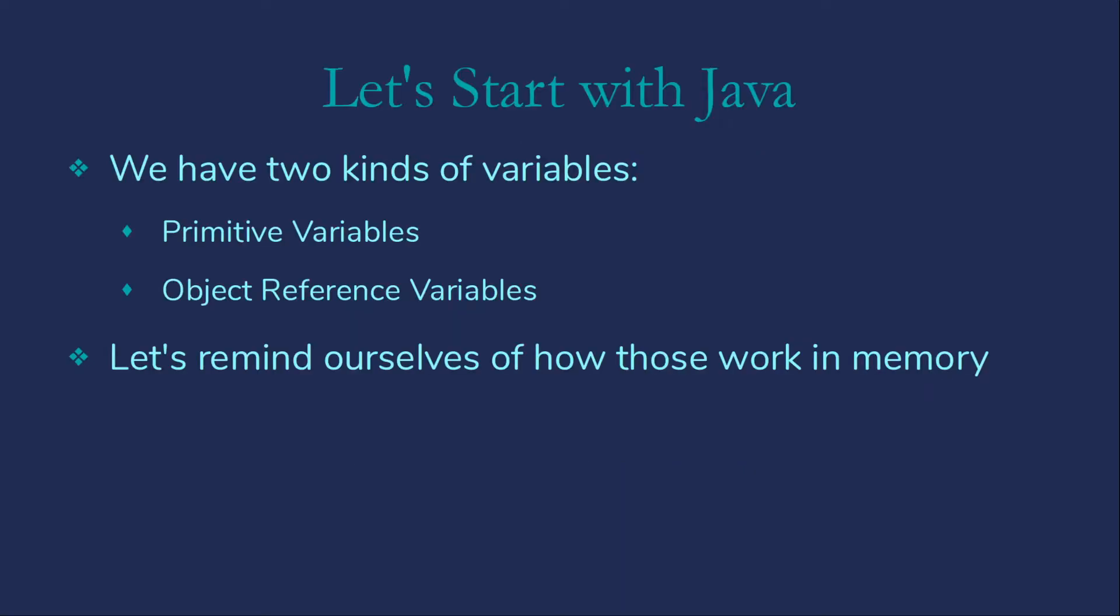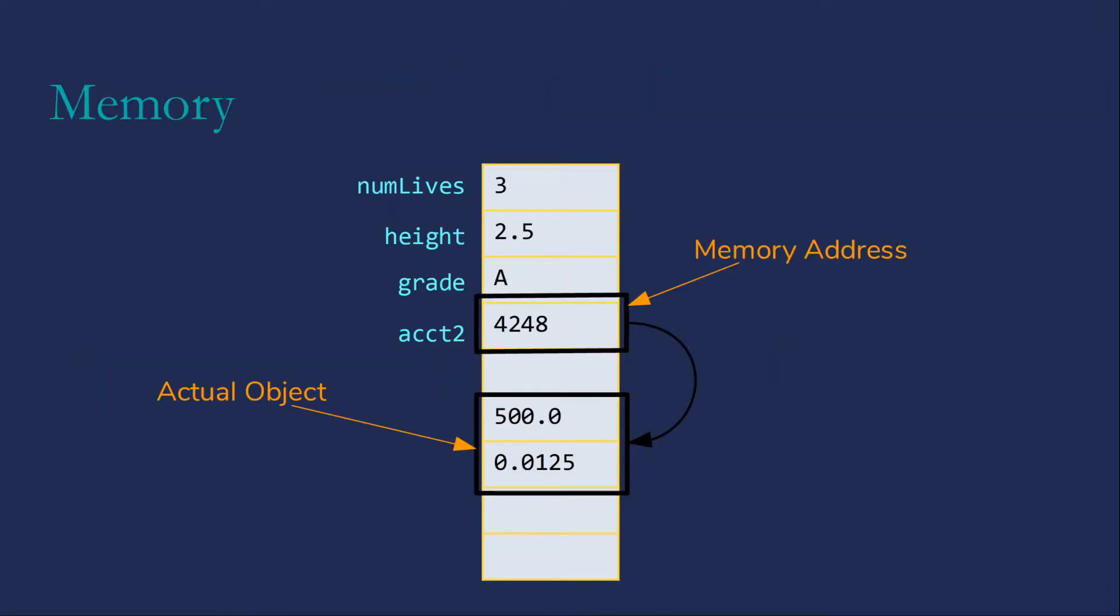I want to start out by reminding you about references in Java. In Java we have two kinds of variables: primitive variables and object reference variables. Let's remind ourselves of how those work in memory.